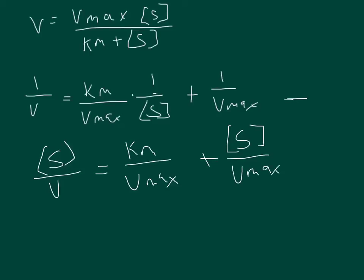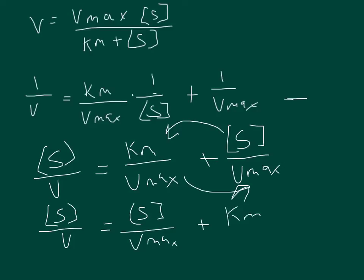Now the next thing I want to do is I'm going to rearrange this so that this is over here and this is over here. What I mean is the substrate concentration over V is equal to the substrate concentration over Vmax plus Km over Vmax. And so what I did is I just rearranged the order of operation but didn't change anything.